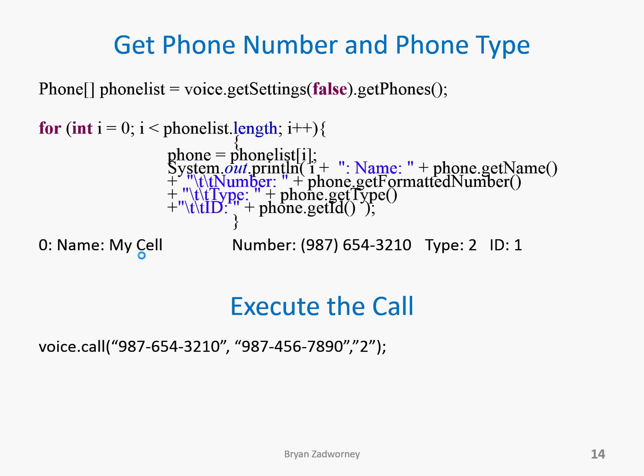So I wrote a little bit of code to figure out what my phone type is. The first thing I had to do was make a list of phones. By calling voice.getSettings and passing in false — meaning don't download new settings, just use whatever they were when you created them initially — and then calling getPhones, that gave me a list of objects of type Phone. I then walked through that phone list and for each phone, I outputted the index of the phone list, the name, the cell phone number, the type, and the ID. What I really care about is the formatted number and the type of the phone. This Google Voice account only had one cell phone associated with it, so I'm only getting one output.